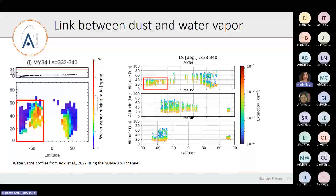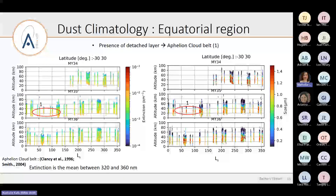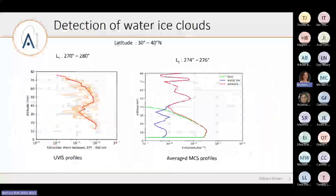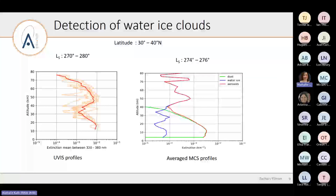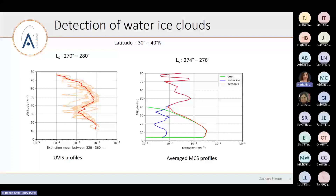Question: Have you done a comparison with MCS during the aphelion cloud belt? Because during that season in the tropics there is a large overlap between water ice clouds and dust, and even in MCS retrievals it's not always easy to separate the two. Answer: Not yet, no.